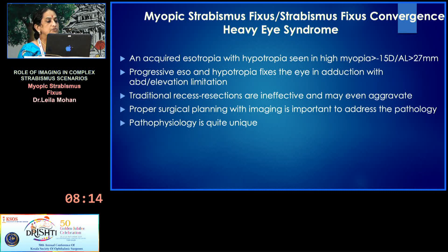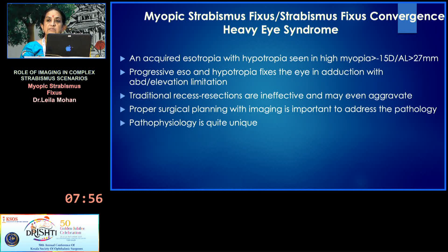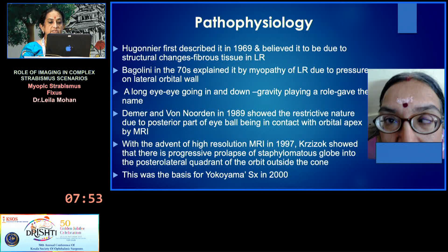There is progressive eso- and hypertropia which fixes the eye in adduction; abduction and elevation are limited. Traditionally, recession-resection used to be done, which is ineffective and may even aggravate the condition. So proper surgical planning with imaging is important to address the pathology, and the pathophysiology is unique in this case.